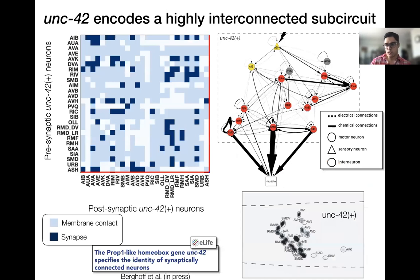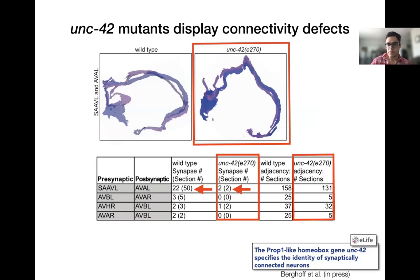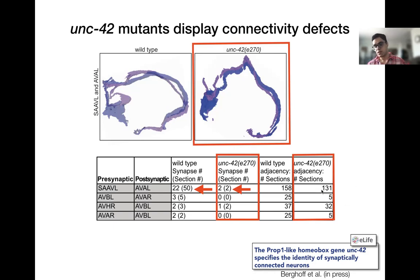Examining ONG-42 more closely shows that ONG-42-expressing neurons form a highly interconnected sub-circuit involving motor neurons, sensory neurons, and interneurons. On the left-hand side is a graph-theory-based network representation where synapses are shown as dark squares and membrane contacts as light squares. On the right-hand side is a more intuitive network diagram. To experimentally validate the role of ONG-42 in connectivity, mutant experiments were done by the Oliver Hobart lab, showing that ONG-42 mutants have significantly reduced numbers of synapses in several neurons in the ONG-42 sub-circuit, including neurons SAA, AVA, and AVB. Notably, membrane contact numbers in these mutants are maintained while synapses are significantly reduced, further confirming that ONG-42 plays a role in synaptic specificity rather than membrane contact guidance.